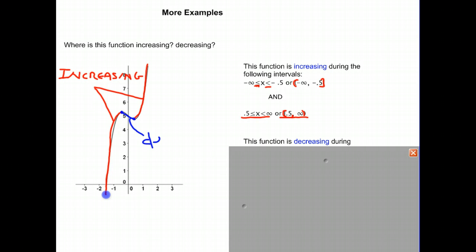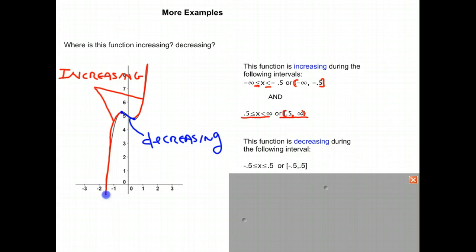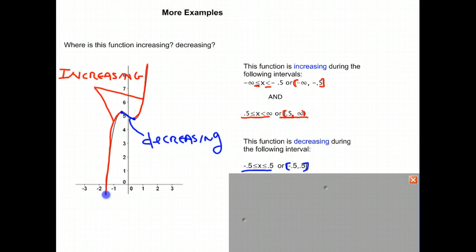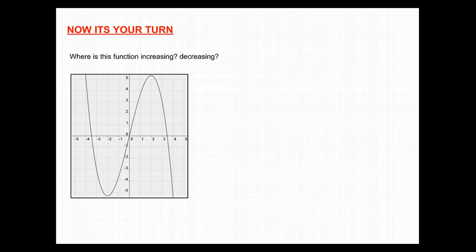Putting the decreasing interval in mathematical notation, we can say x is greater than or equal to negative 0.5 and less than or equal to 0.5. Or, using square brackets on both sides: x is between negative 0.5 and 0.5 inclusive. And now it's your turn. If you have any trouble answering the question, just refer back to the screencast to help you. Thank you, and good luck.